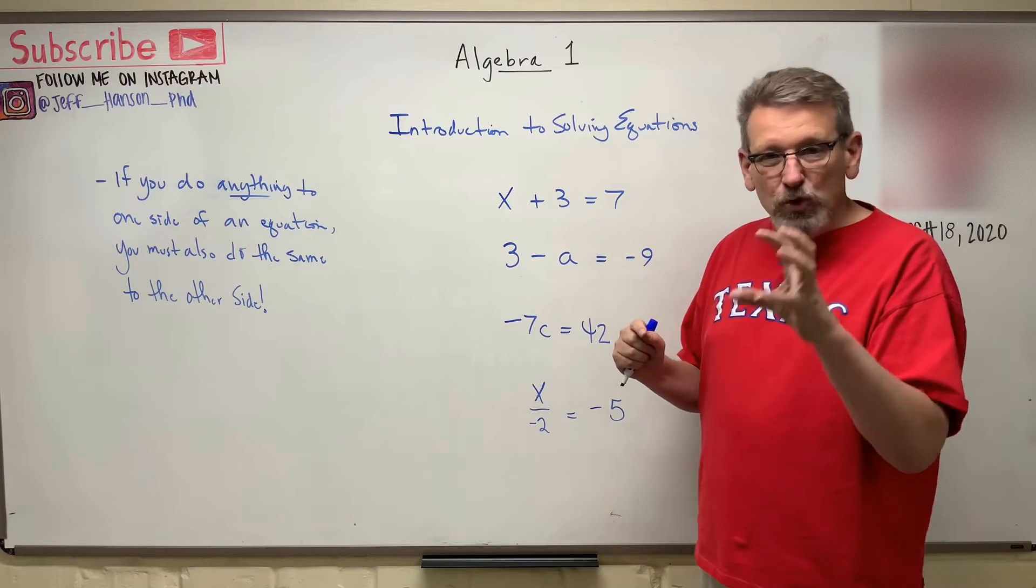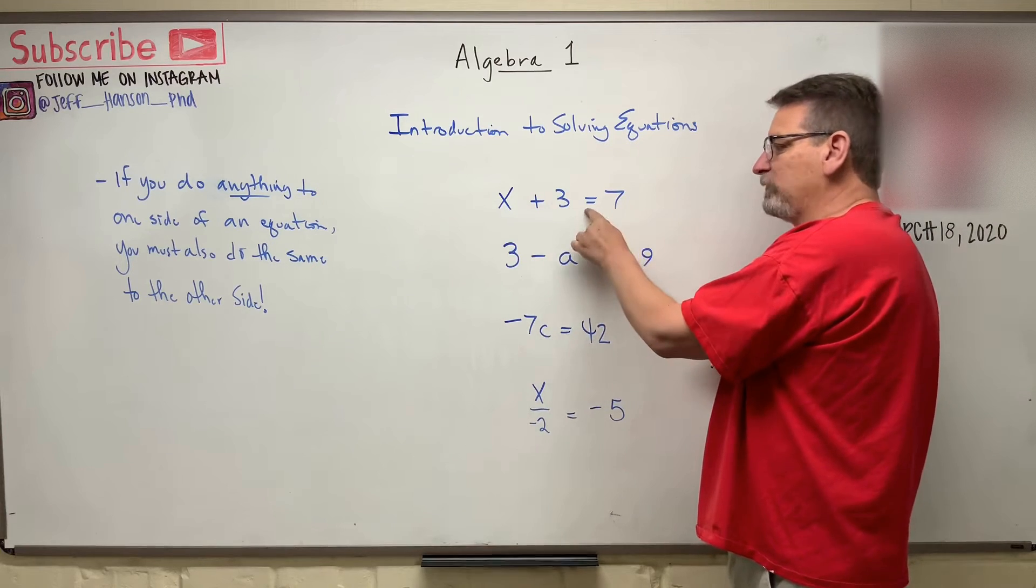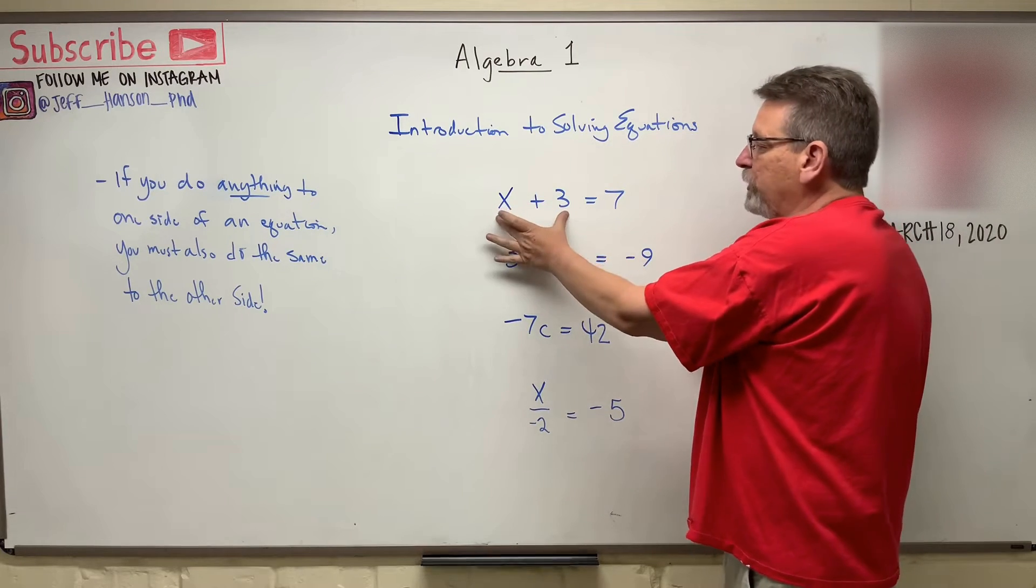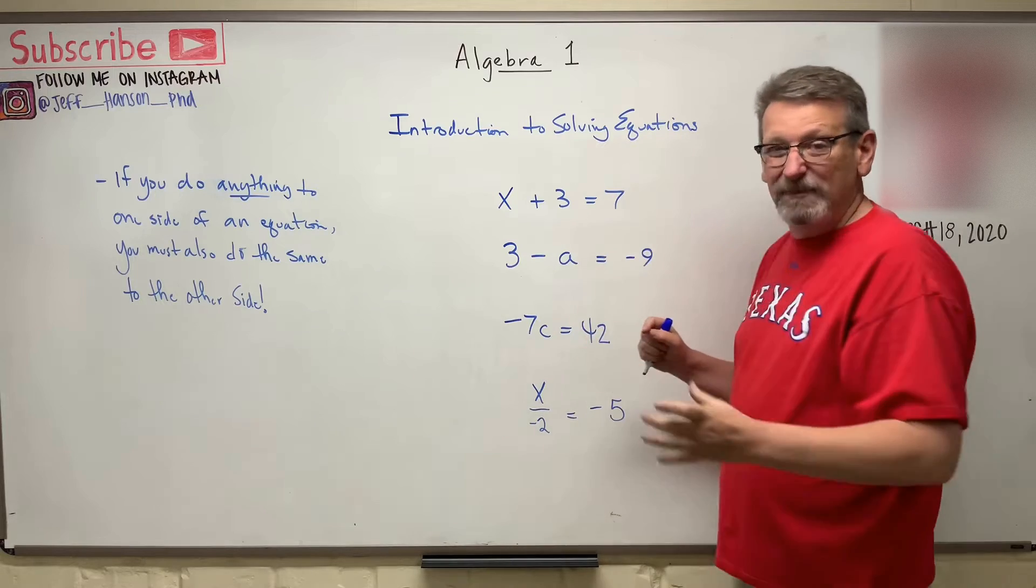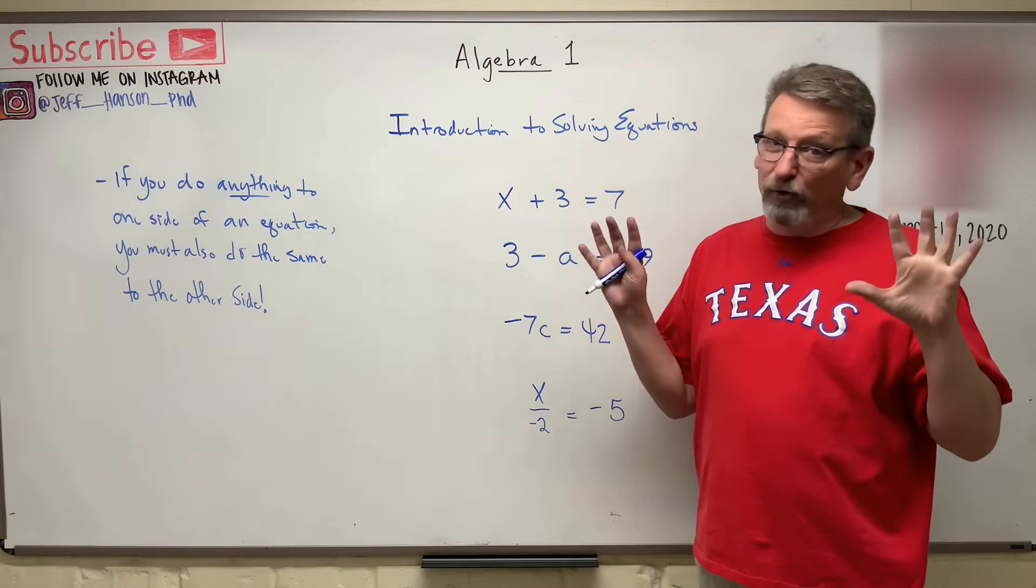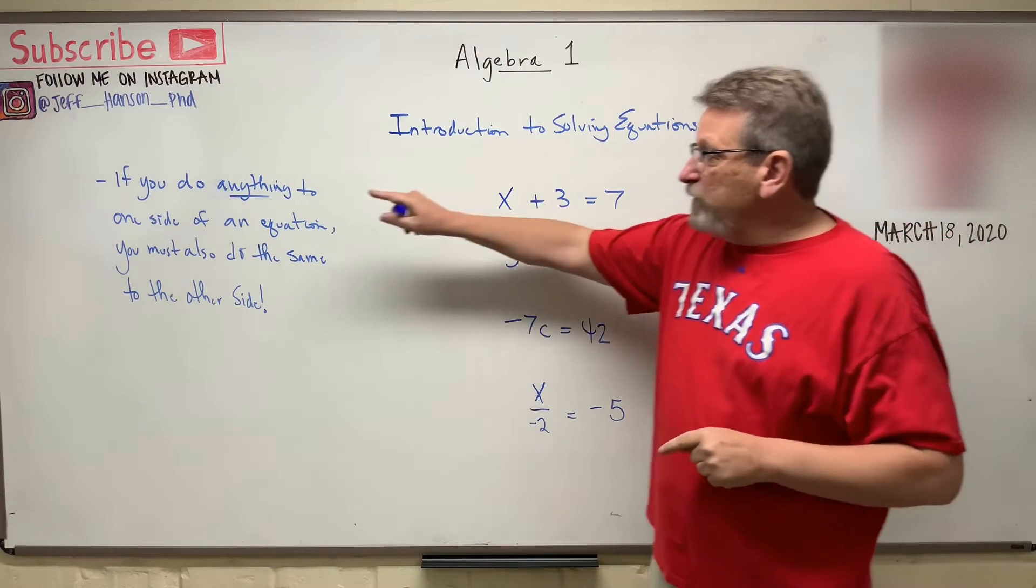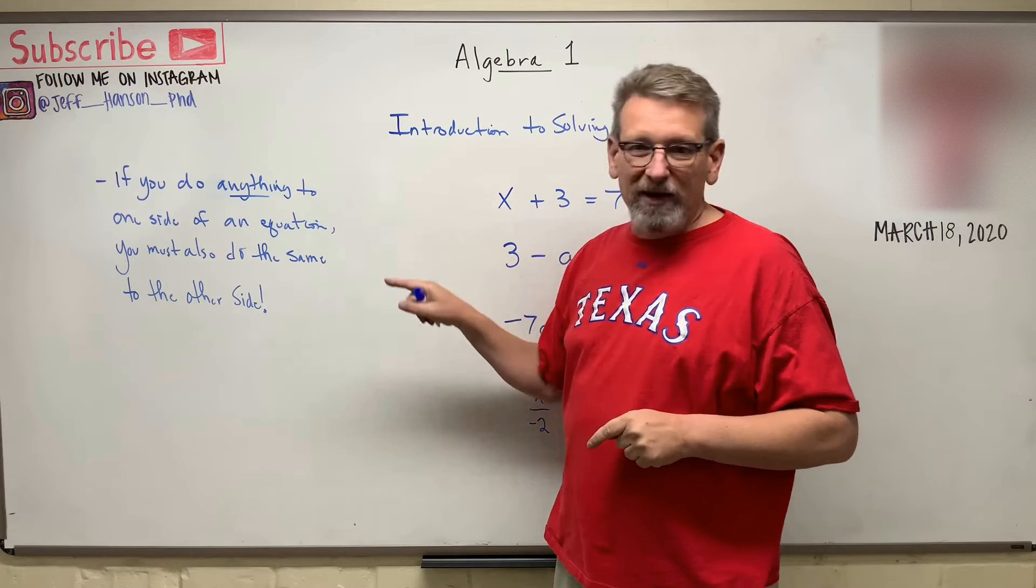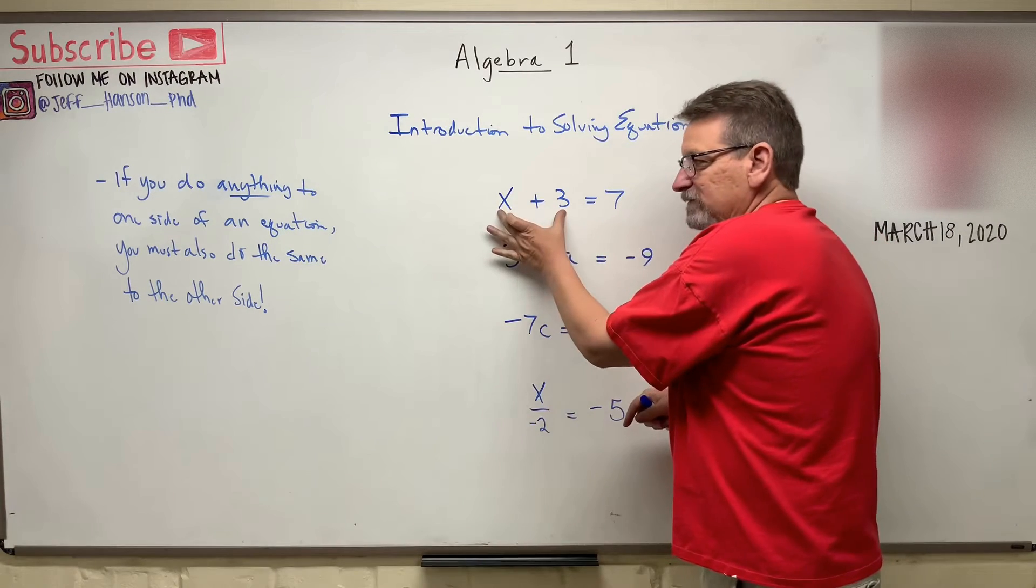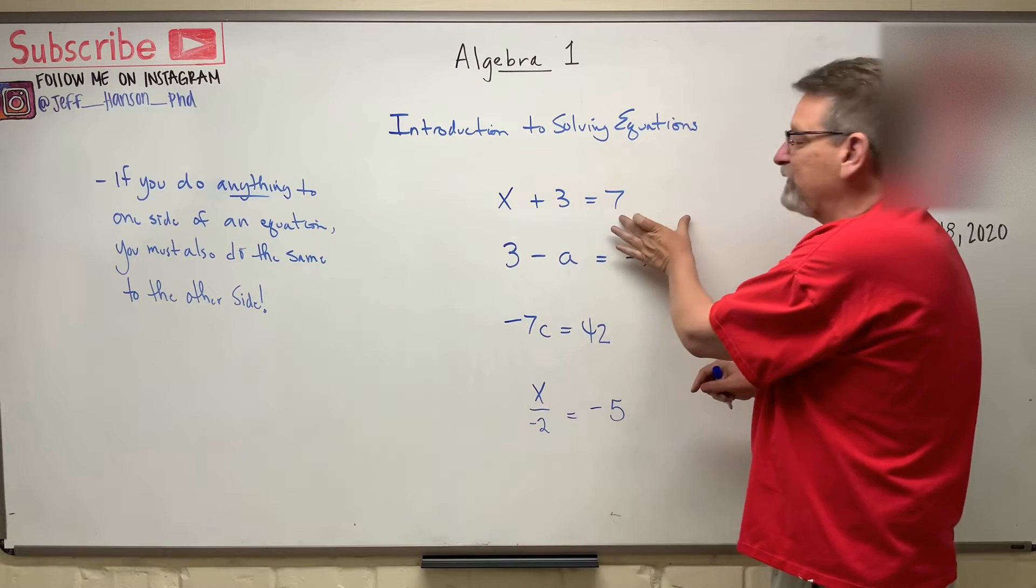And the E-Q-U word is equal. This side is equal to that side. That's what that side means. This junk is equal to that junk. So the first thing you need to know about equations, we're going to use all the tools that we've been using so far. But the first thing you need to know is this. If you do anything to one side of an equation, if I do anything to this side, I have to do the same thing to the other side. I have to do the same thing to this side.